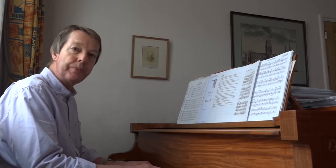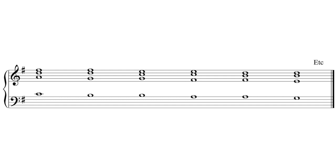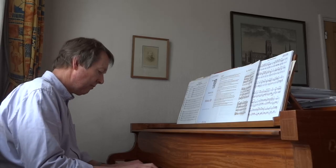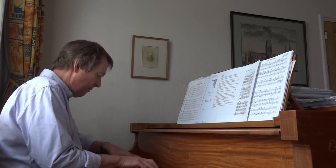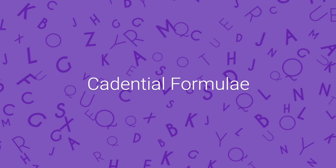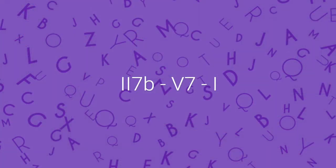So first of all we start with the last inversion of a dominant seventh, so the bass note now instead of being a D is a C. And then the second chord has a major seventh in it. You may have noticed that I added a stock cadential formula at the end of that: chord 2 7b 5 with a passing seventh 1. This is a chord progression which is used a lot by Bach and we encounter it most often in his chorale harmonisations.